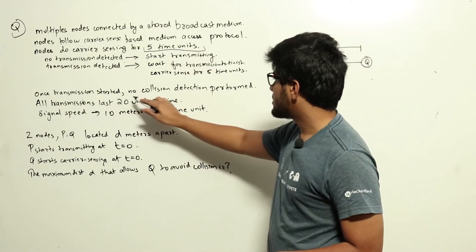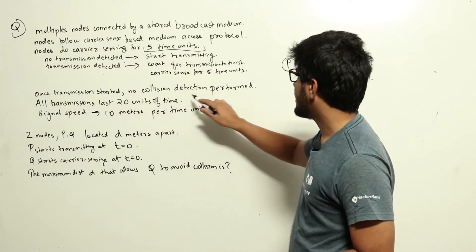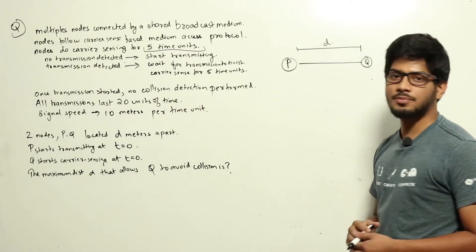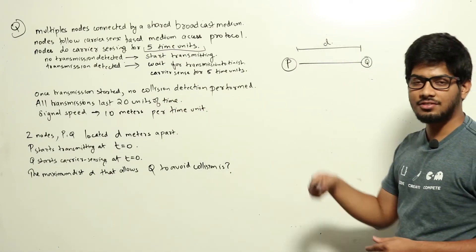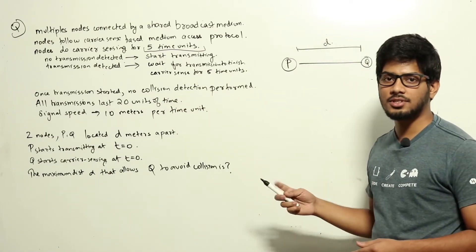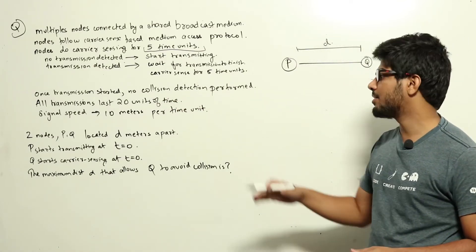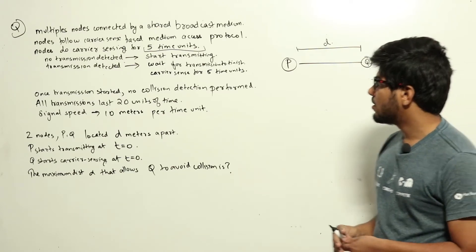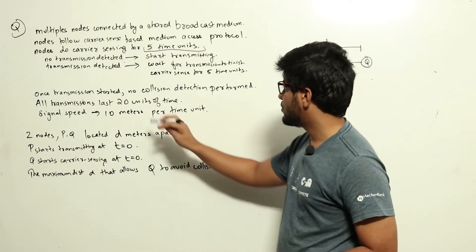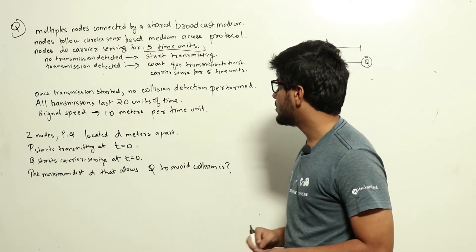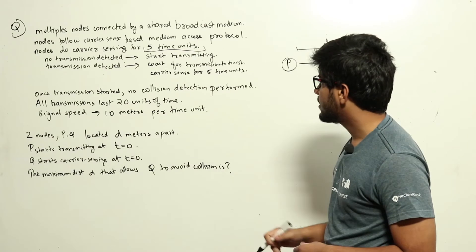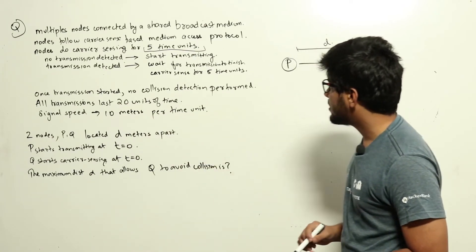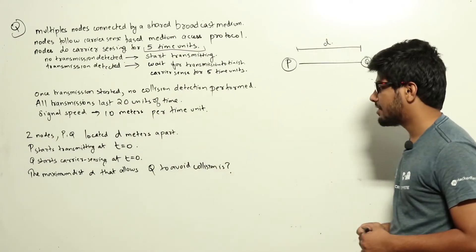Once a transmission is started, no collision detection is performed. So after starting a transmission, if some collision happens, the node doesn't care — it keeps on transmitting. All transmissions last for 20 units of time, and signal speed is 10 meters per time unit.